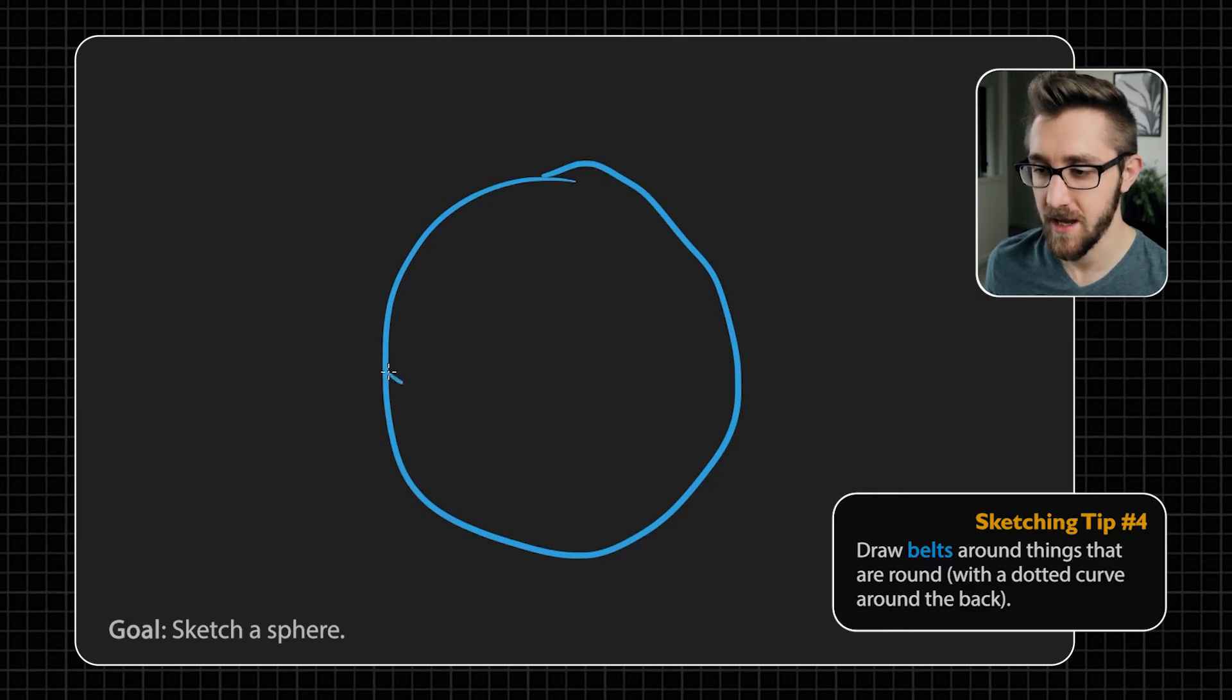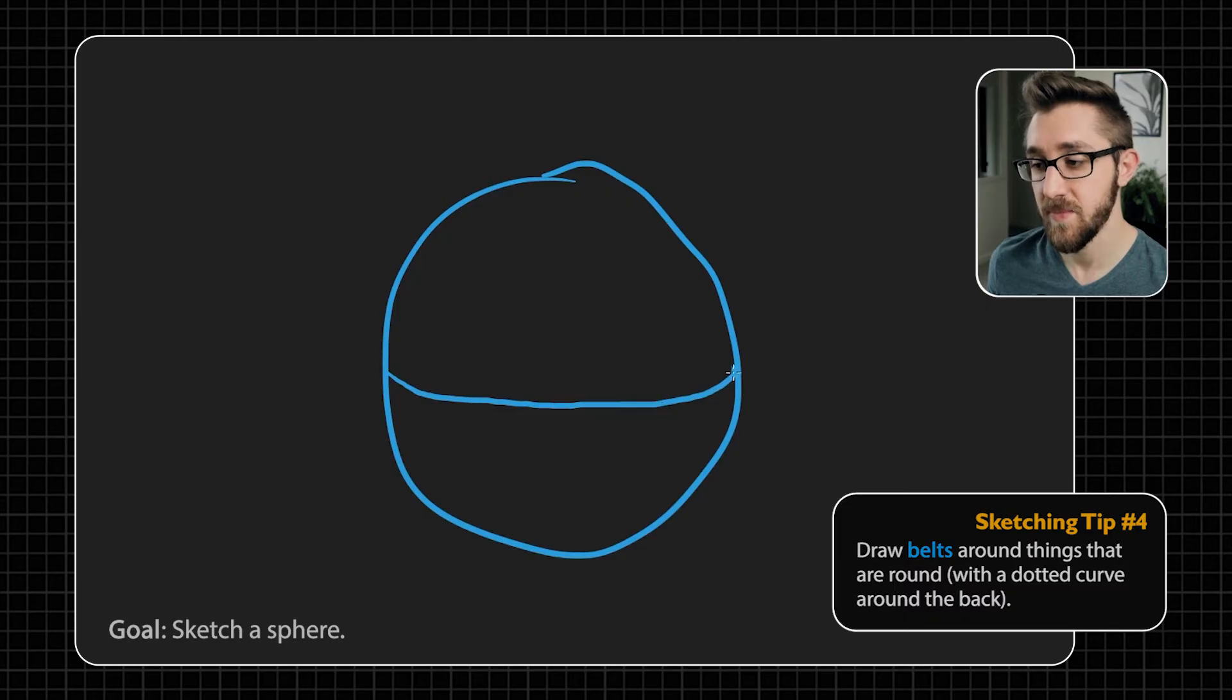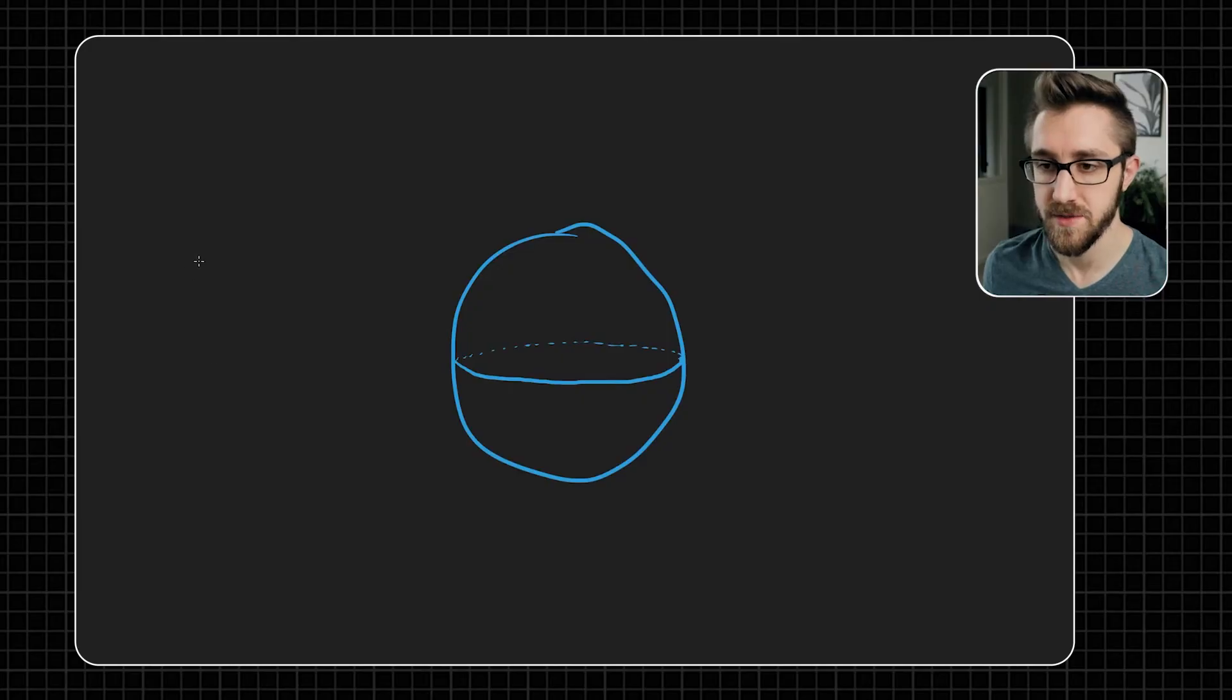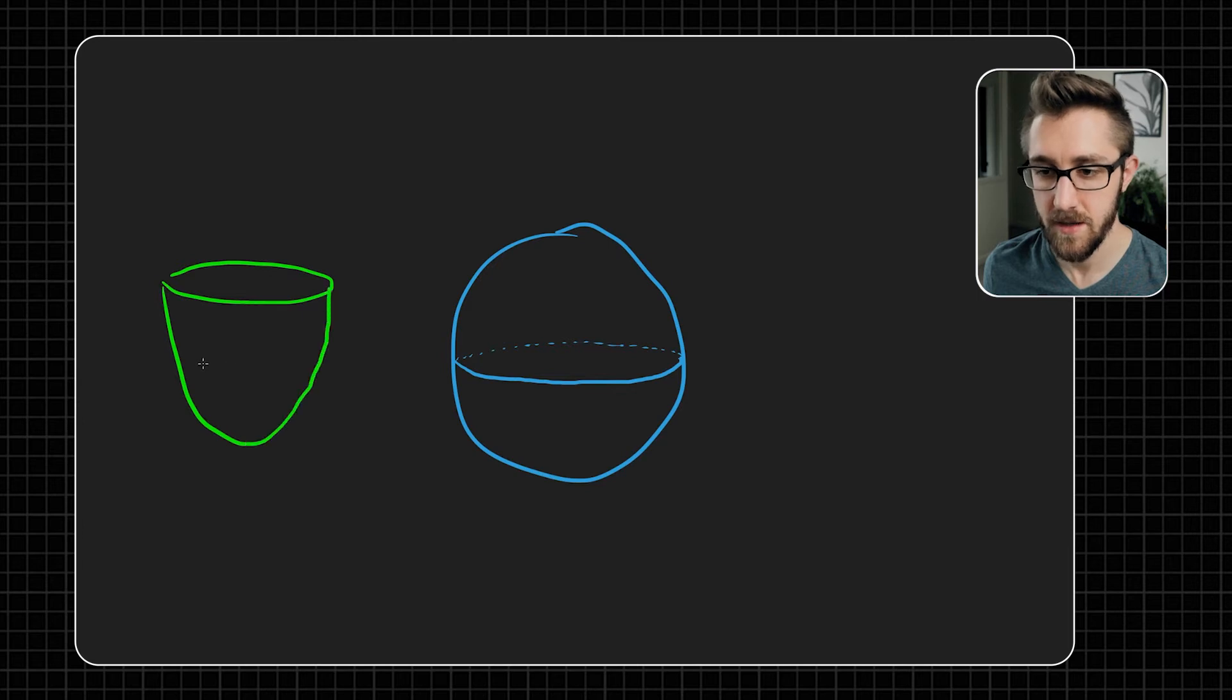And what I mean by that is really for this, if we want to make this a sphere, we'll draw in a kind of flattened circle that looks like the equator. This is the equator of the sphere going around the front. And remember from tip number two, if we want to show it going around the back, we should draw it as a dotted line. And this is a pretty common way that you'll see people draw things like spheres.